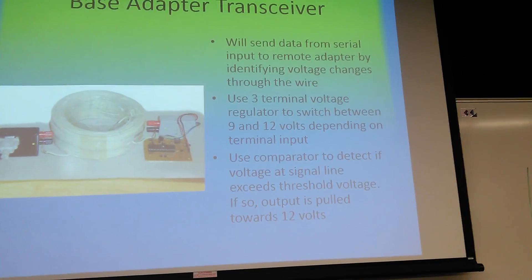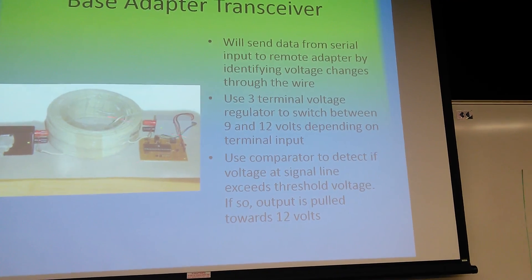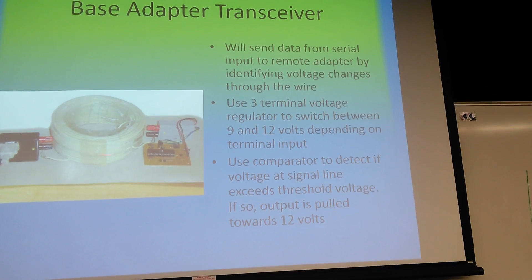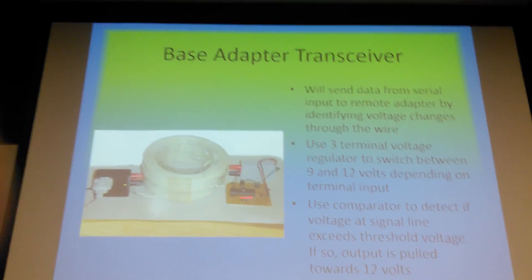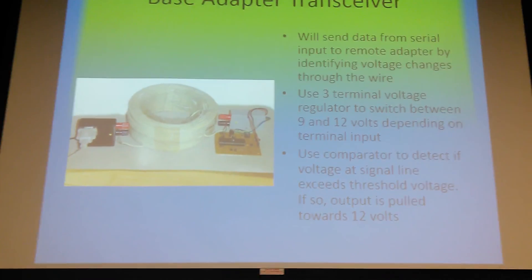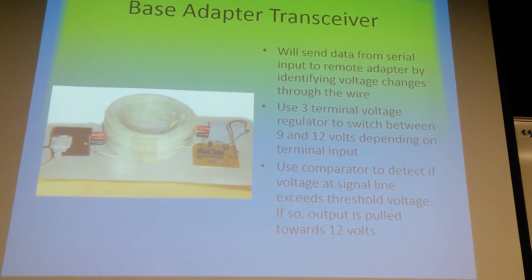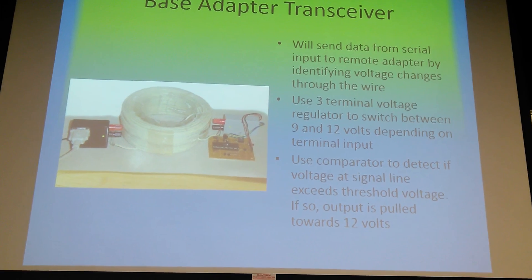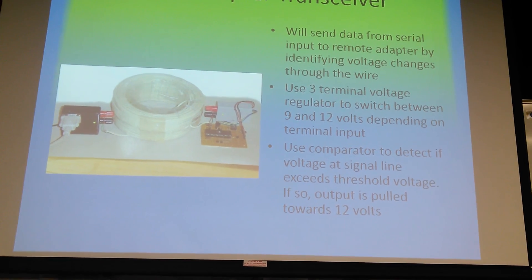This is a picture of what I had hoped to do, and I basically achieved everything except getting the fancy cases. This is the spool of wire I was talking about. This is an example from someone else who also did this project from a circuit seller magazine, showing that you can communicate from far distances. The spool of wire I bought is about 500 feet — this one is just a little over 100 meters, but it still achieves the same thing. It sends serial data by identifying voltage changes through the wire, using a three-terminal voltage regulator to switch between 9 and 12 volts, and the comparator pulls the output toward 12 volts if the signal line voltage exceeds the threshold voltage.